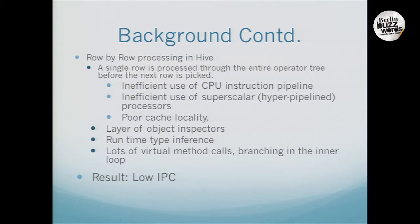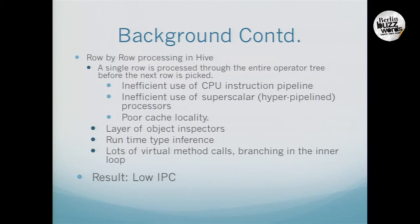Continuing on the background — what was the state of Hive before we went into vectorization? Why was CPU performance a concern? First of all, Hive was processing row by row, which many databases do. Basically you take a row, go through the entire operator tree, and then pick up the next row. The operator tree can be very heavy, very complex, with lots of instructions. Therefore it is often not very efficient in terms of CPU usage, how you use the instruction pipeline and how you use the superscalar processors.